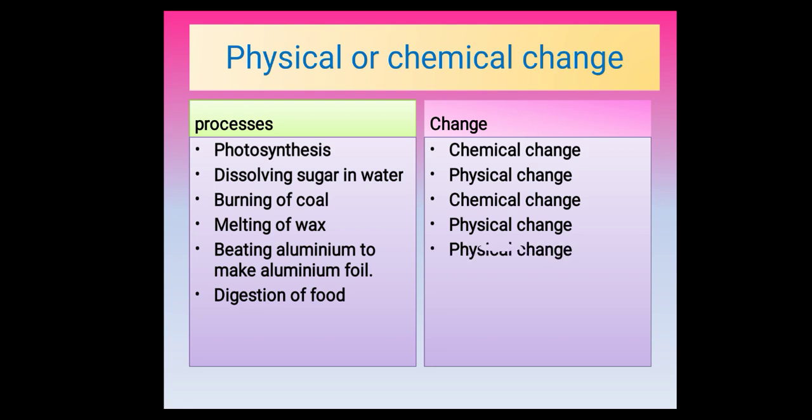Melting of wax: when wax melts it is a state change, so it is an example of a physical change. Beating aluminum to make aluminum foil: when we beat aluminum and convert it into foil form, we do not create a new substance — it is still aluminum, just changed in form — so it is a physical change. Digestion of food: digestion is the breakdown of complex food molecules into simpler form. Carbohydrates get converted into starch, proteins into amino acids, fats into fatty acids and glycerol — new substances are formed through chemical reactions. So digestion of food is an example of a chemical change.